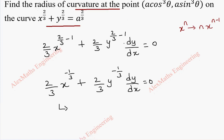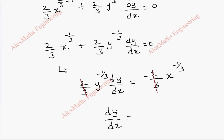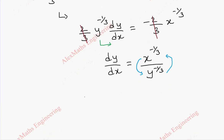Let's take this term to the other side. So we get (2/3)y^(-1/3)·(dy/dx) = -(2/3)x^(-1/3). Now we can cancel (2/3) on both sides, giving dy/dx = x^(-1/3) / y^(-1/3). When we carry the negative powers — numerator to top and denominator to bottom — the powers become positive, so dy/dx = y^(1/3) / x^(1/3).